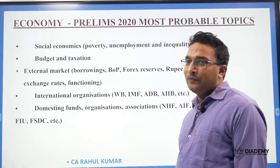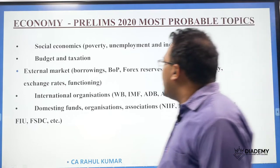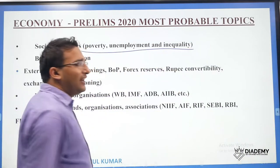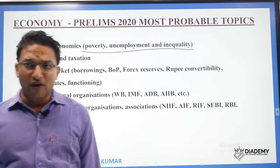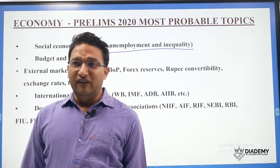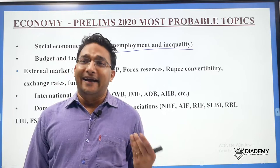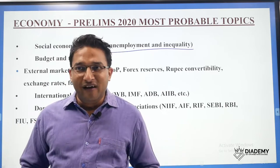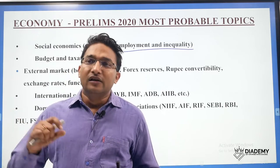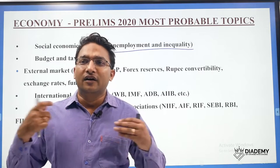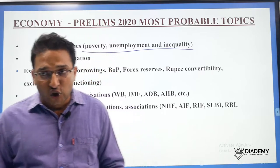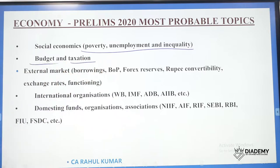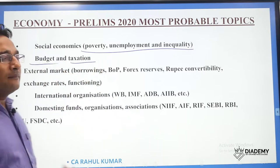Poverty, unemployment, and inequality are also very important areas. You should go through the basic terms — what is the difference between underemployment and unemployment, and what are the different types of unemployment. Then cover poverty and the various calculations of poverty.